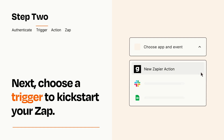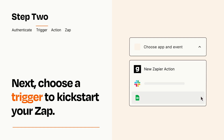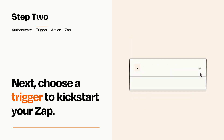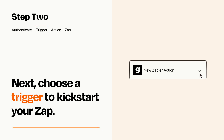Now let's set up your trigger, which is the event that starts your Zap. Pick the trigger event that you want from the list. When you set up this step, your Zap will pull in test data from your trigger app that you'll see later when setting up your action app.